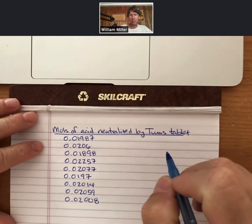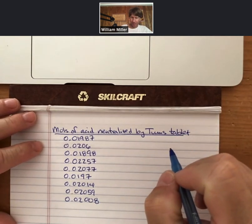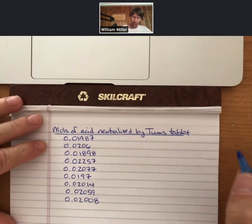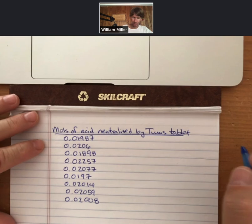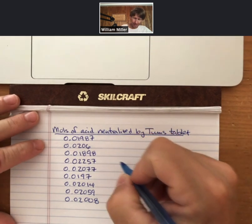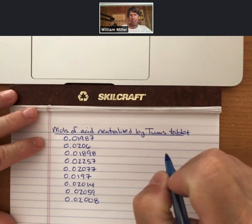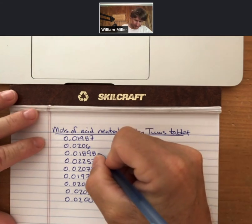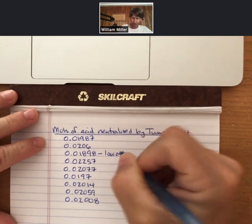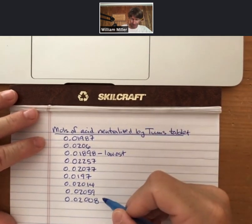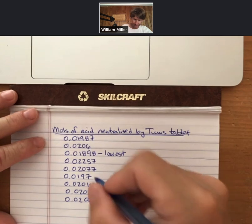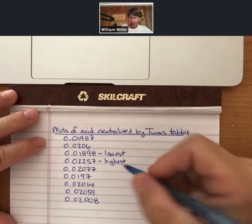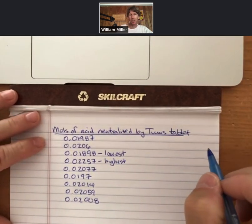I'm going to conduct a Q test on this set of data. You can see that they're all pretty tightly grouped, all of my data points. These are data from nine separate students. But in order to do a Q test, you have to find first the lowest point, and it looks like 0.01898 is my lowest point and the highest point. One of these two is going to be our potential outlier.